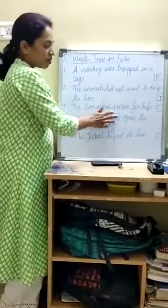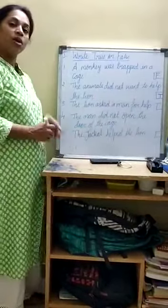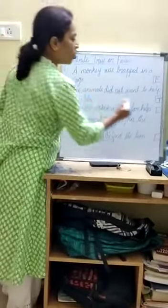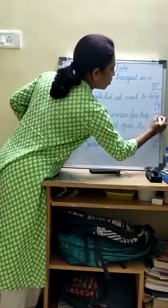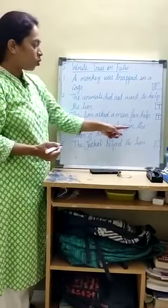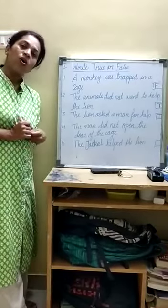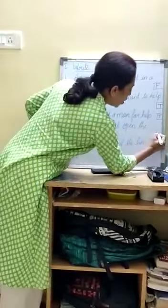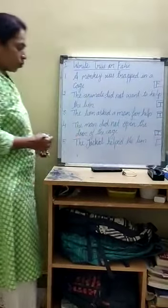Next: 'The lion asked a man for help.' Whom did the lion ask for help? A man. So this is also true. Next: 'The man did not open the door of the cage.' Did he open it or not? Yes, he opened it. So this statement is false.